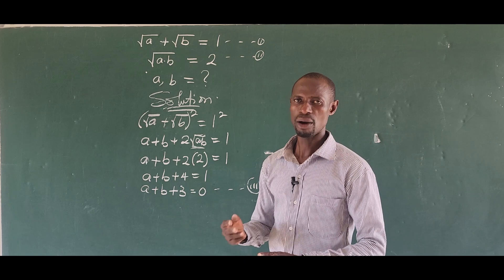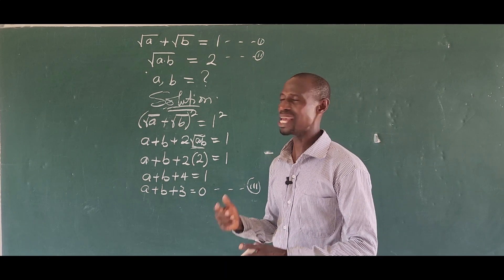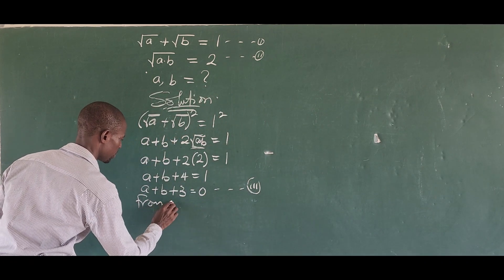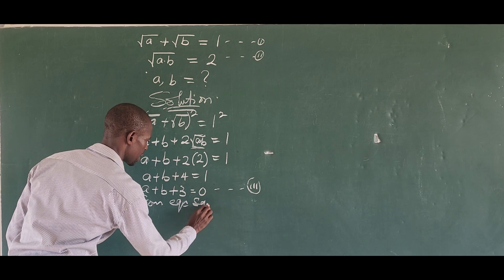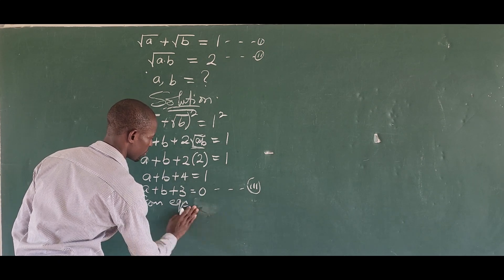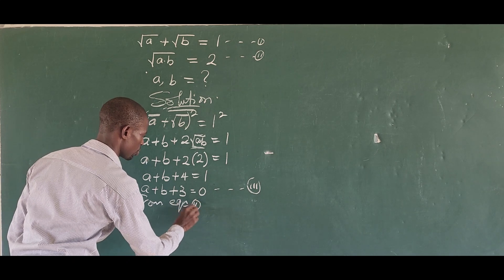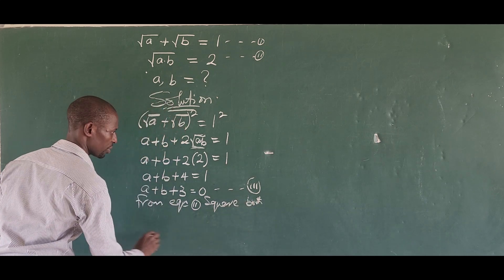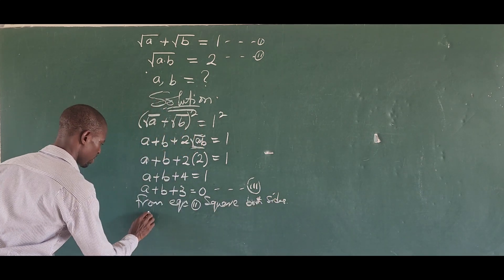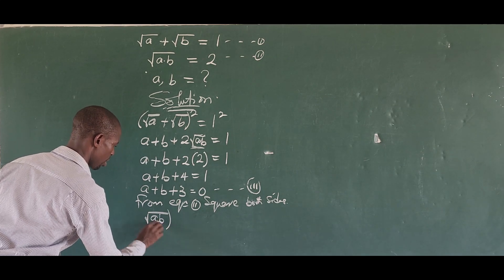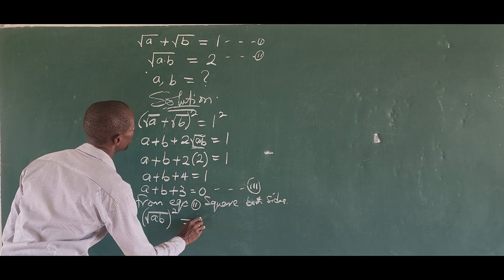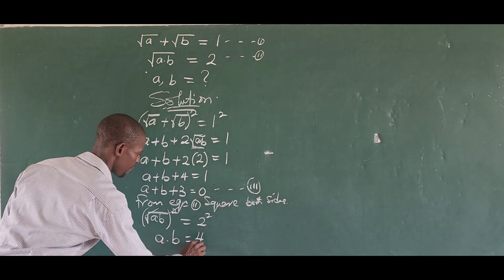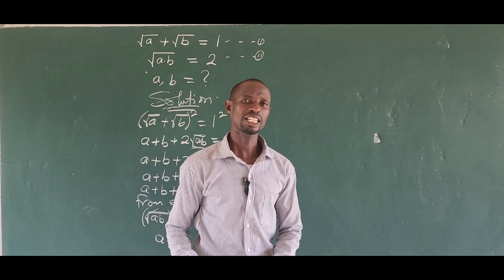Now we take equation two and square both sides to also eliminate the square root radical. Squaring both sides of equation two gives us [sqrt(ab)] squared equal to two squared. The square root and the square cancel, so we now have a times b equal to four.